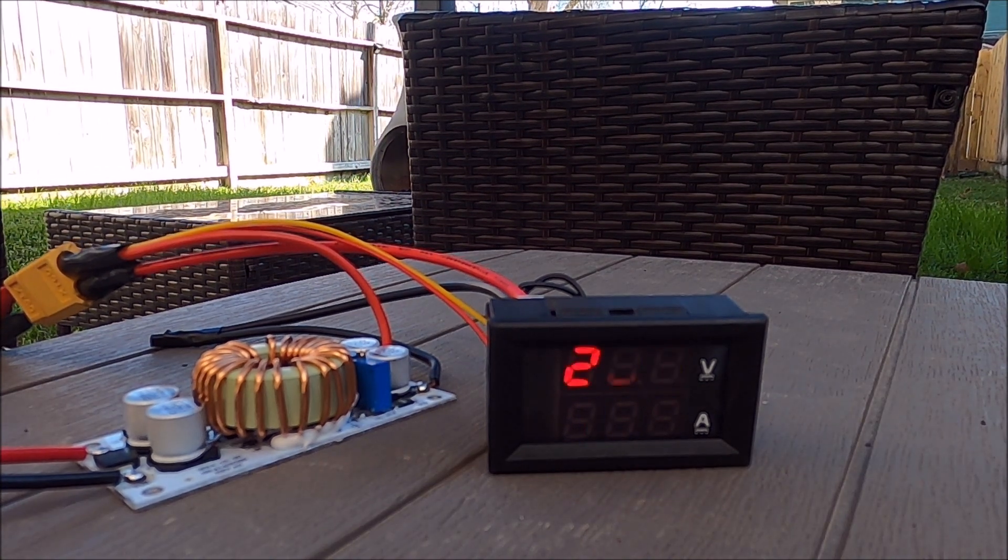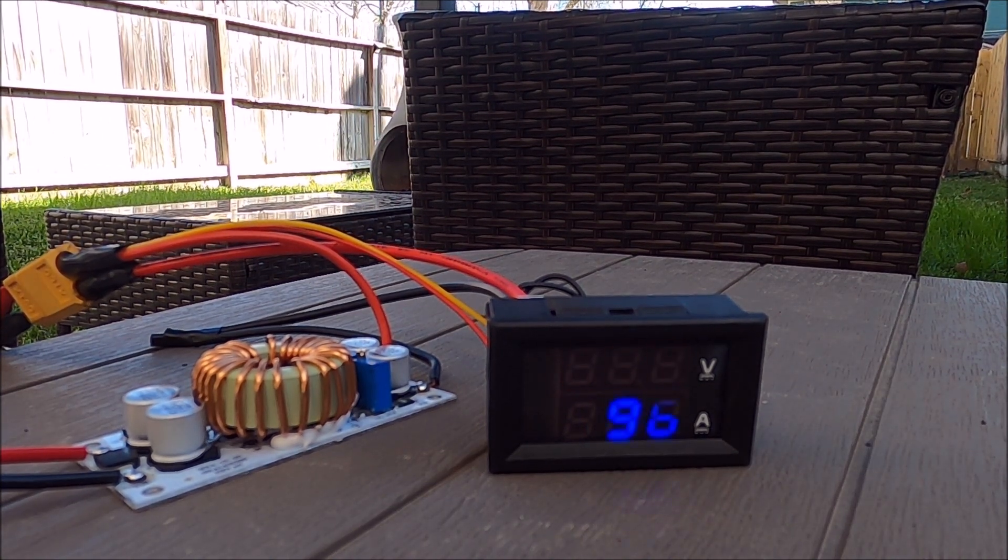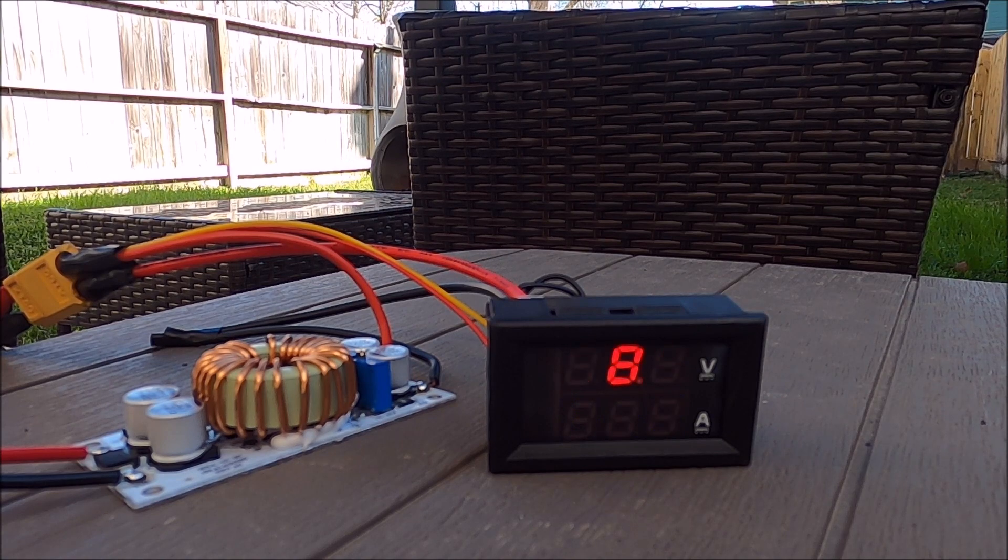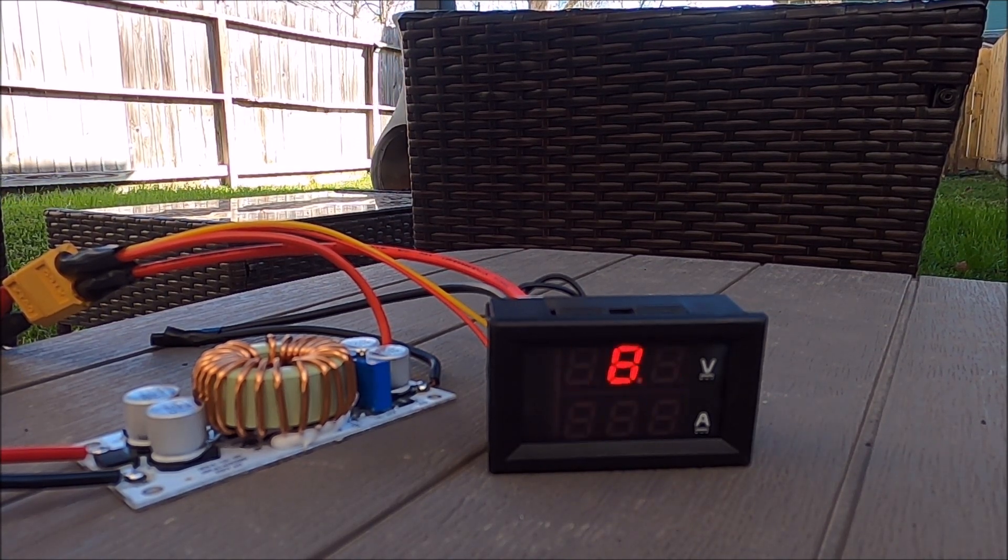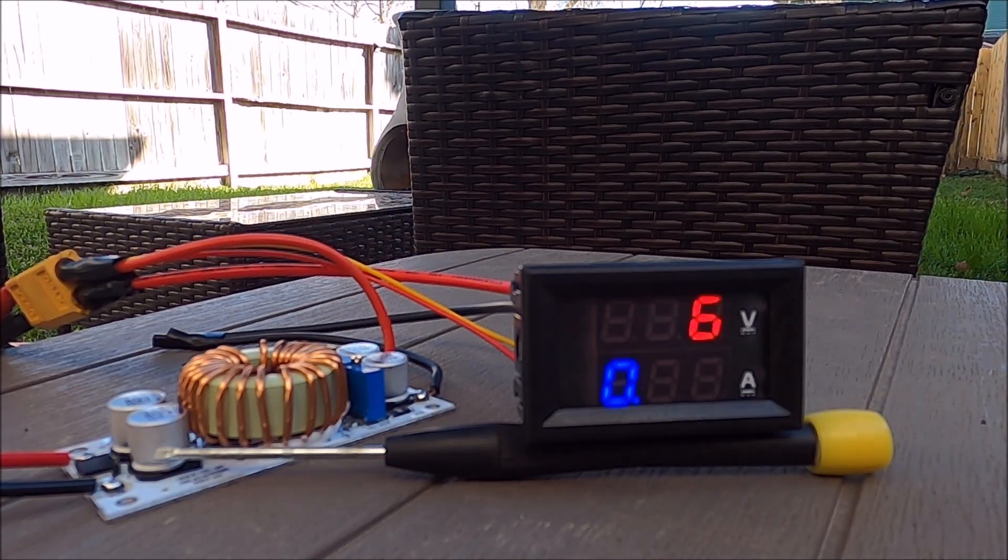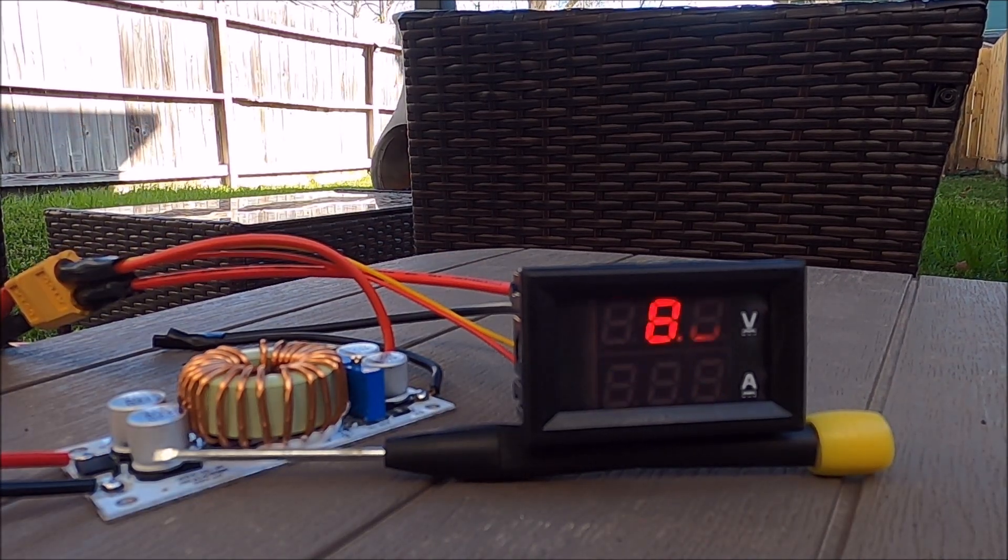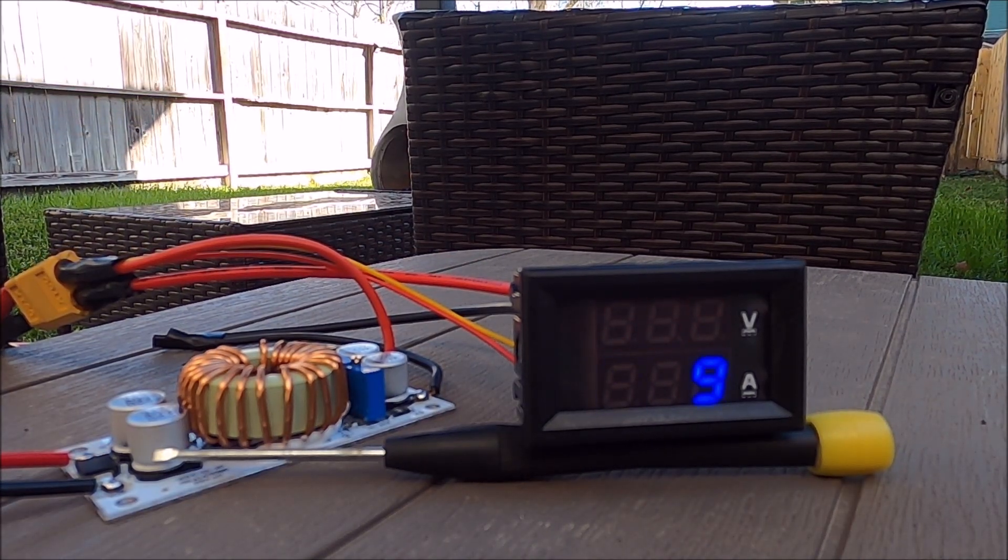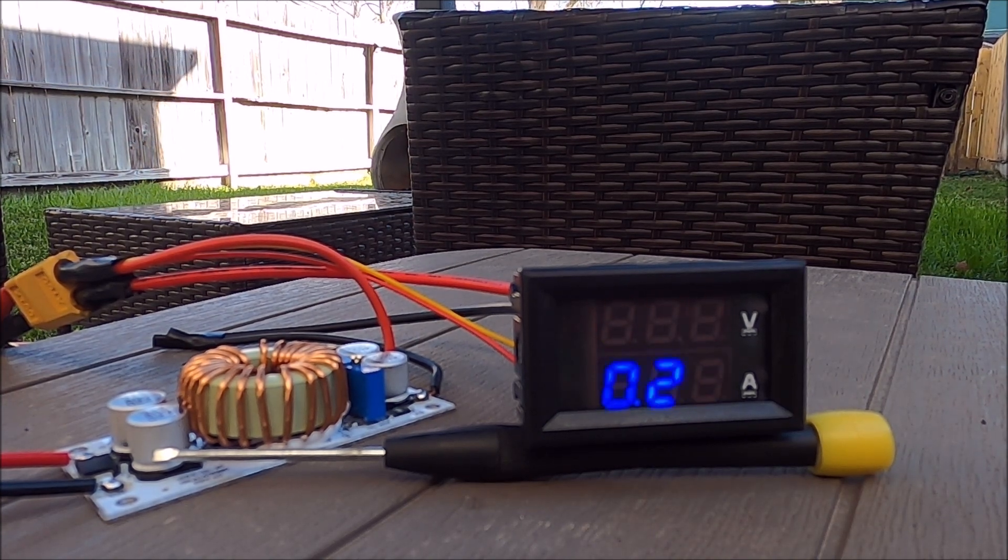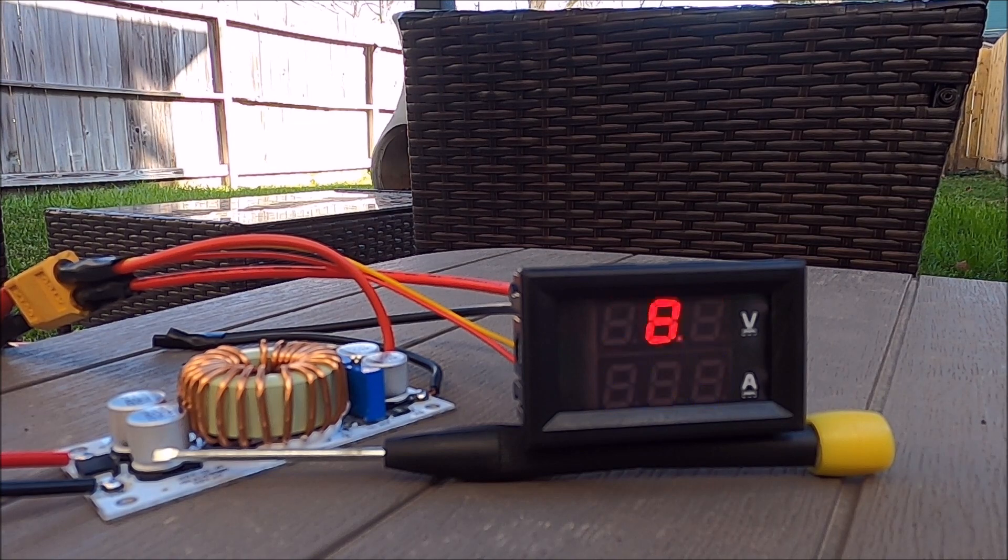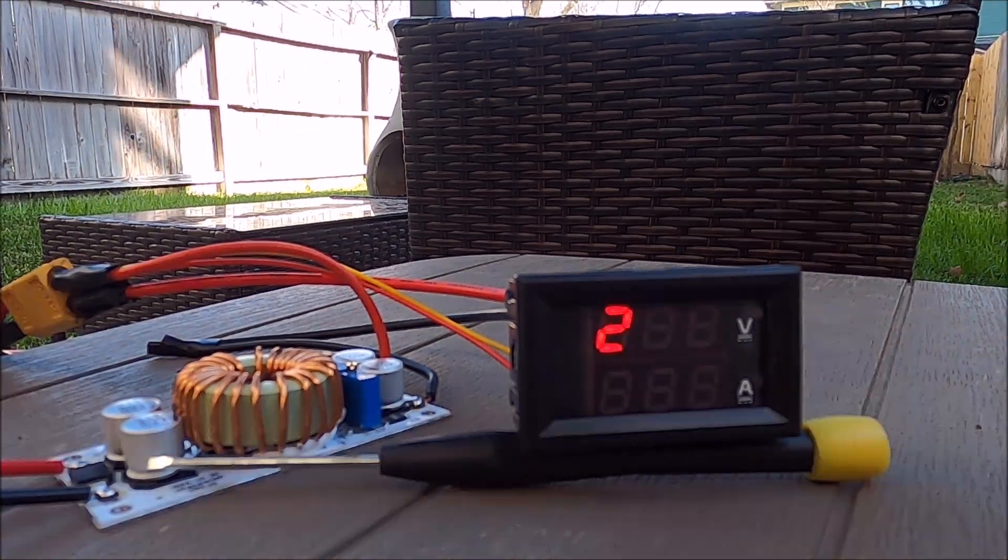I decided to do a test by setting the constant voltage to 28.6 volts. The battery was currently at 28.5 volts. We should see the voltage on the battery hit the constant voltage limit and then the amps ramp down. I set up a time lapse and here is what happened.